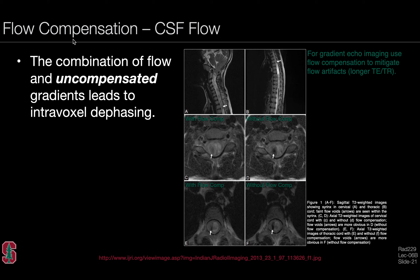Here we're talking about using flow compensated gradient waveforms to limit or mitigate CSF flow artifacts. The combination of flow and an uncompensated gradient leads to intravoxel dephasing. If the spins are moving at different velocities — as in the case of CSF flow — they accrue different amounts of phase, and if you have different amounts of phase within a voxel, that leads to signal attenuation. Without flow compensation, you can see these signal voids, which diagnostically could be concerning. When we turn on flow compensation, you can see that the signal levels return to near normal. The motion artifacts are substantially mitigated with a flow compensated gradient waveform, the downside being that it will extend the TE and the TR of your sequence.